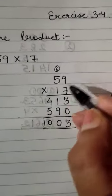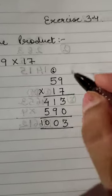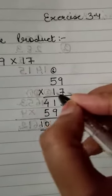So 59 × 17. We have to multiply it with the 2-digit numbers.